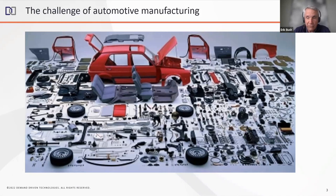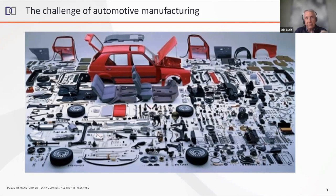If you tried to build a vehicle custom, it would cost you hundreds of thousands of dollars. But even today, cars are quite affordable, especially when you think of all the technology involved. This illustration shows the wide range of parts that go into an automobile — gathering them all together, creating sub-assemblies, putting the vehicle together, ensuring warranty compliance — it's really an impressive feat of engineering, manufacturing capability, and human ingenuity.